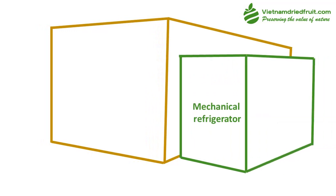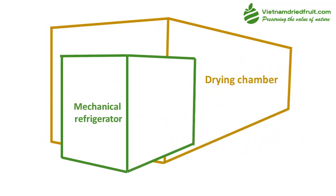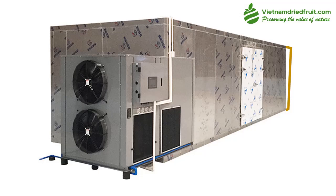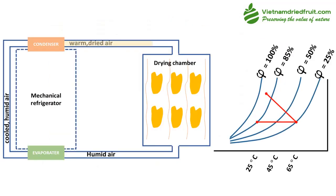In a heat pump drying system, aside from the drying chamber, the system is equipped with one or two mechanical refrigerators depending on the capacity. The refrigerators serve to reduce the temperature of the air coming out of the drying chamber, and the water vapor is condensed into liquid water, which is then removed.